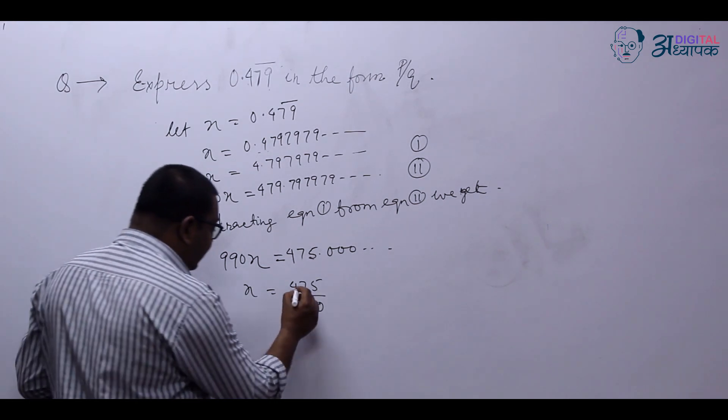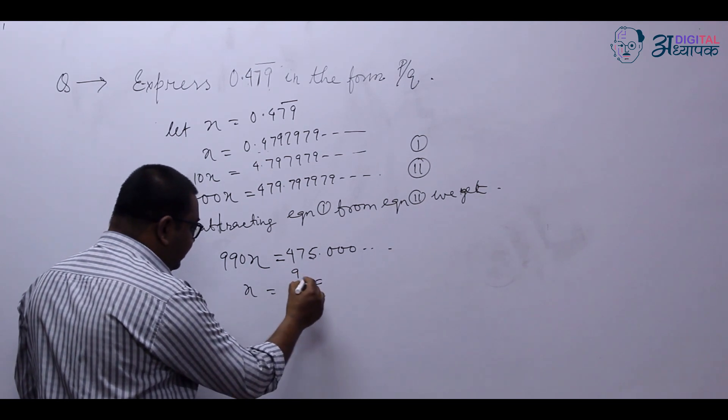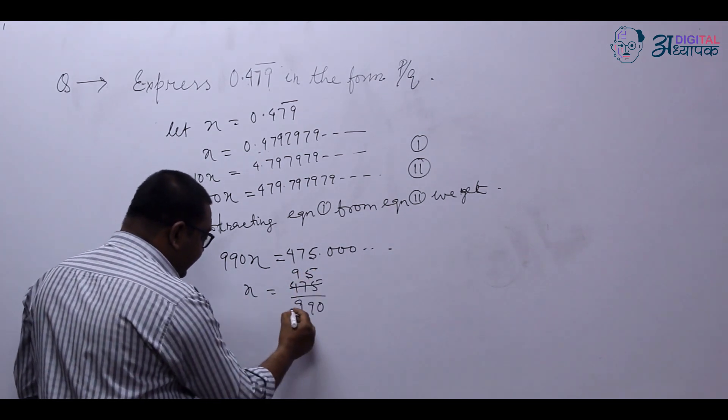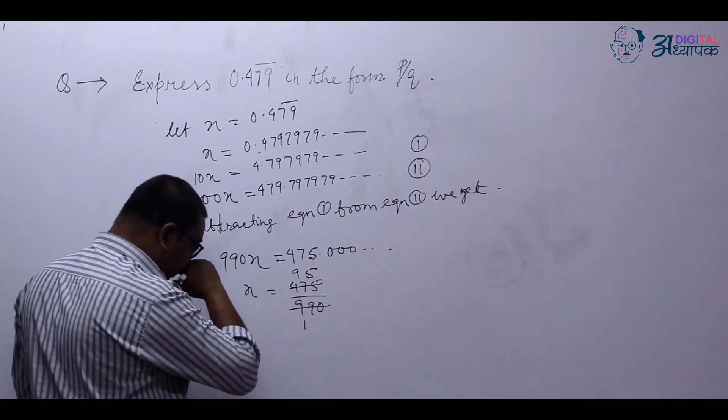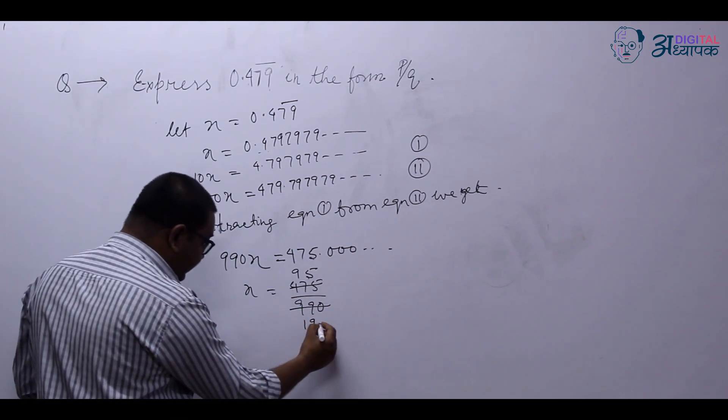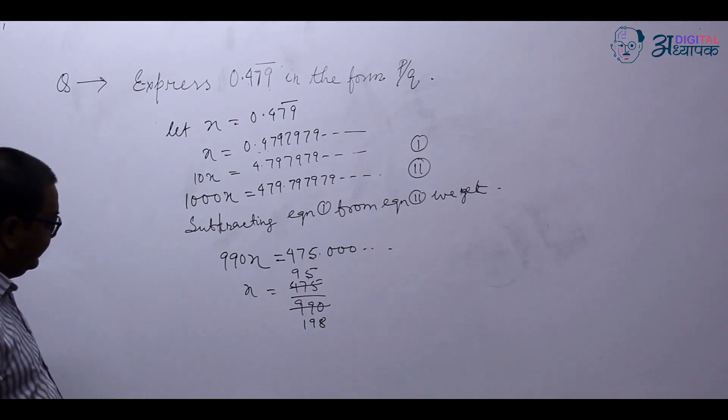So let's cancel it out by 5. It becomes 95 upon 198. I hope we cannot reduce it further. So it becomes 95 upon 198.